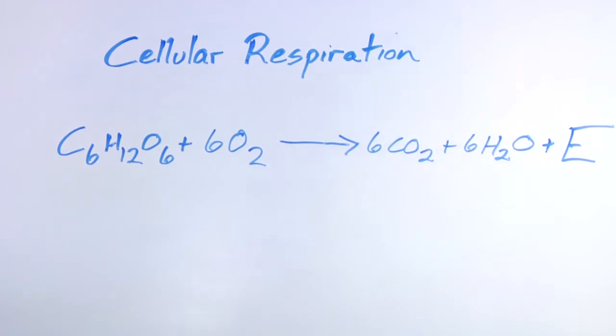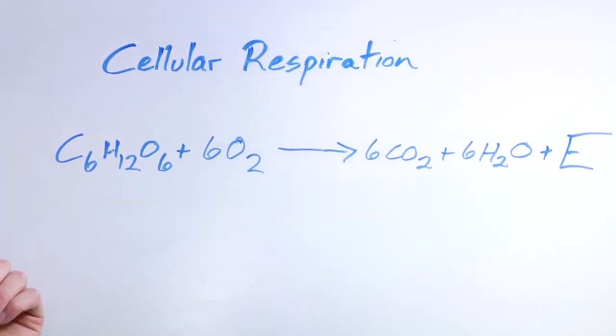Cellular respiration is the process that cells go through to turn glucose into a form of usable energy, and that form would be ATP. So the equation for cellular respiration is fairly straightforward if you know what the components are.